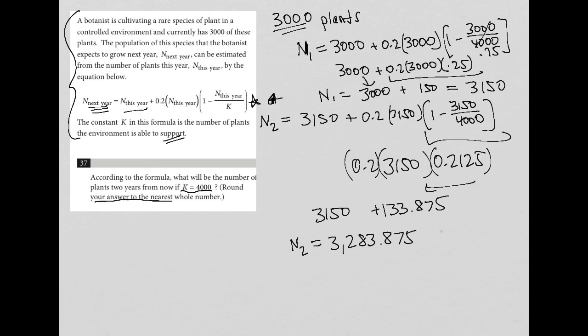It wants us to round to the nearest whole number, so that's going to be 3,284. That should be the right answer.